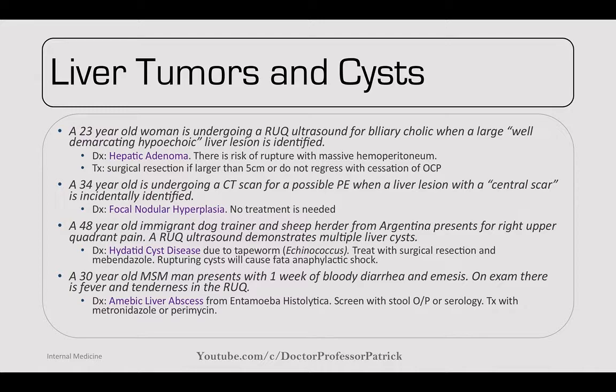A 30-year-old MSM man presents with one week of bloody diarrhea, emesis, fever, and tenderness in the right upper quadrant. This can be an amoebic liver abscess from Entamoeba histolytica. Screen with stool O&P or serology; treat with metronidazole or paromomycin.